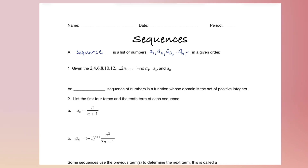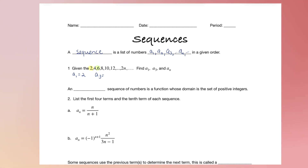Here's our first example. Given the sequence 2, 4, 6, 8, 10, 12... 2 is our first term, so A1 is 2. A3 is the third number in the sequence, so that would be 6.